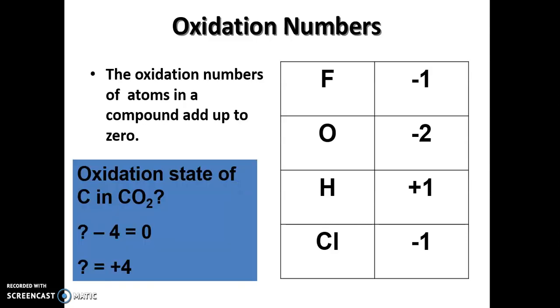Let's look at an example: the oxidation state of carbon in carbon dioxide. We know that the oxidation state of oxygen is -2. In carbon dioxide, we have 2 oxygen atoms. Therefore, -2 multiplied by 2 equals -4.